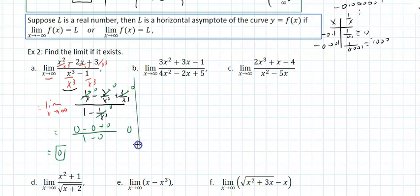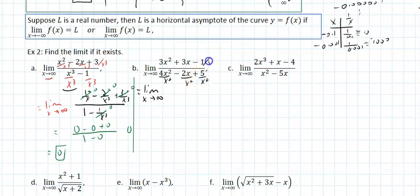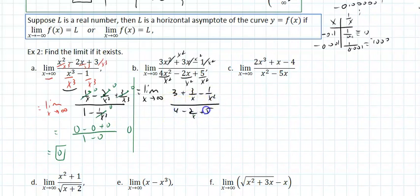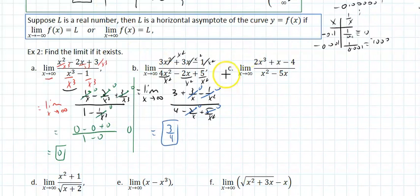For example b, that's still a rational function. I divide by the highest power term of the denominator, which is x squared. You could divide by 4x squared or just x squared. That gives me 3 plus 3 over x minus 1 over x squared in the numerator, over 4 minus 2 over x plus 5 over x squared. As x approaches positive or negative infinity, I do the same thing — divide by x squared.